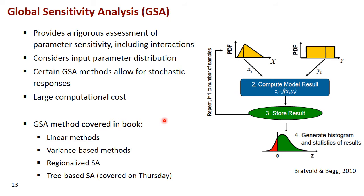That brings us to the second part of this presentation: global sensitivity analysis, where I will spend most of the time. Global sensitivity is closely linked with uncertainty quantification simply because we'll be doing Monte Carlo on some prior distributions. This Monte Carlo will be used for calculating sensitivity, but can later also be used for doing Bayesian analysis and updating parameters. So with a single Monte Carlo or a few Monte Carlo runs, you can already start doing a lot of things beyond just sensitivity analysis.